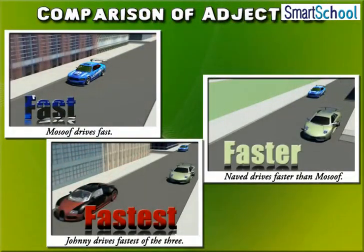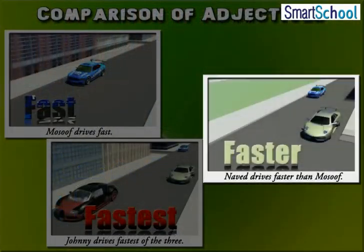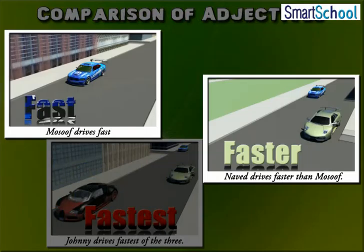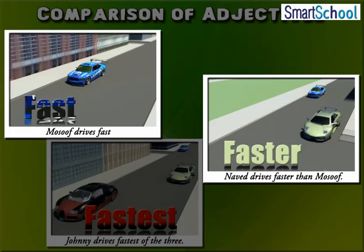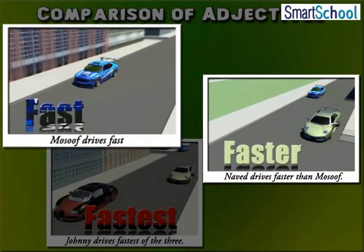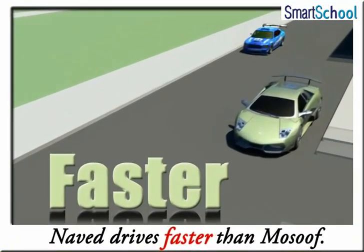When we say Musouf drives fast, we are not comparing his driving speed with anyone else. Hence, we are simply saying that Musouf drives fast. However, when we say Naveed drives faster than Musouf, we compare the driving speed of Musouf and Naveed and say that one is driving faster than the other. Look carefully at the word faster — it is used to compare the speed of Naveed with Musouf.